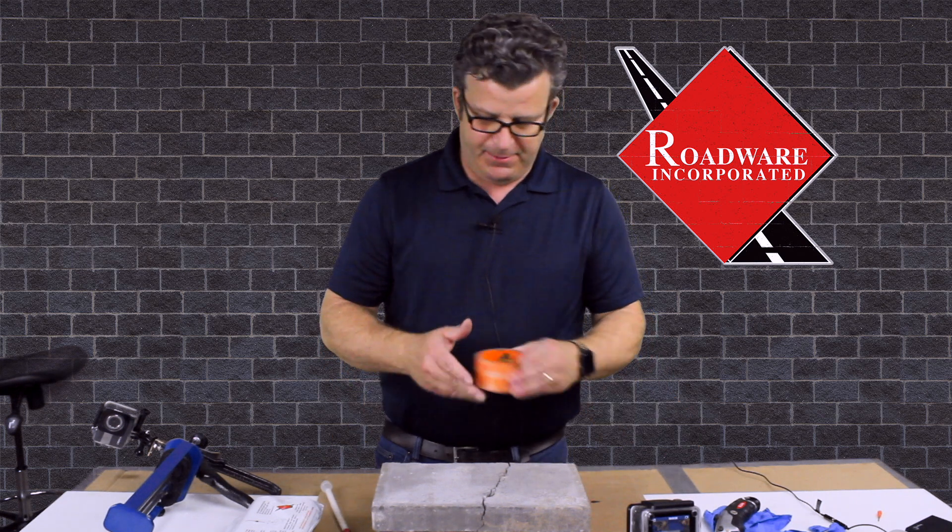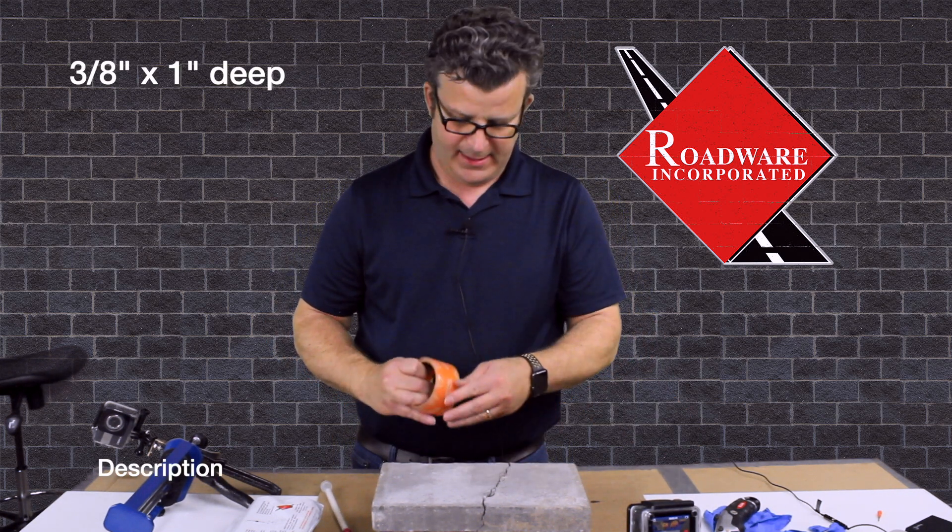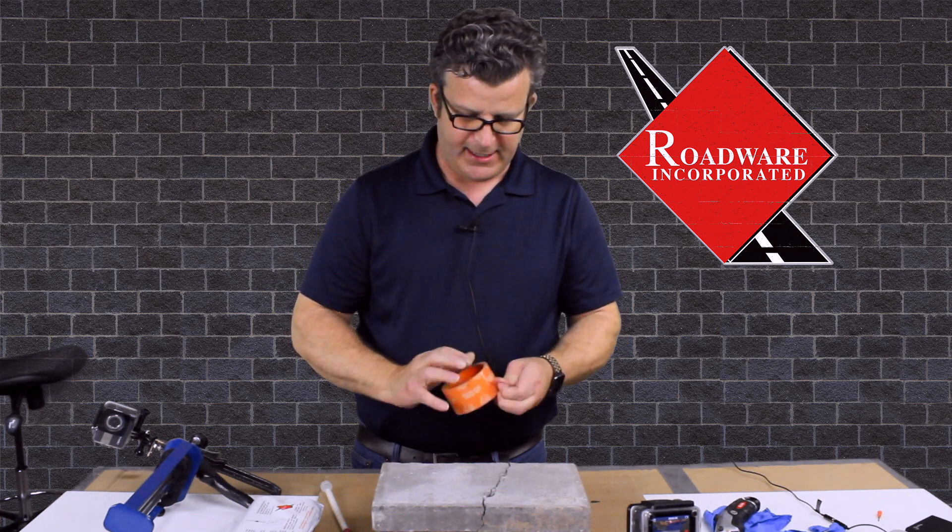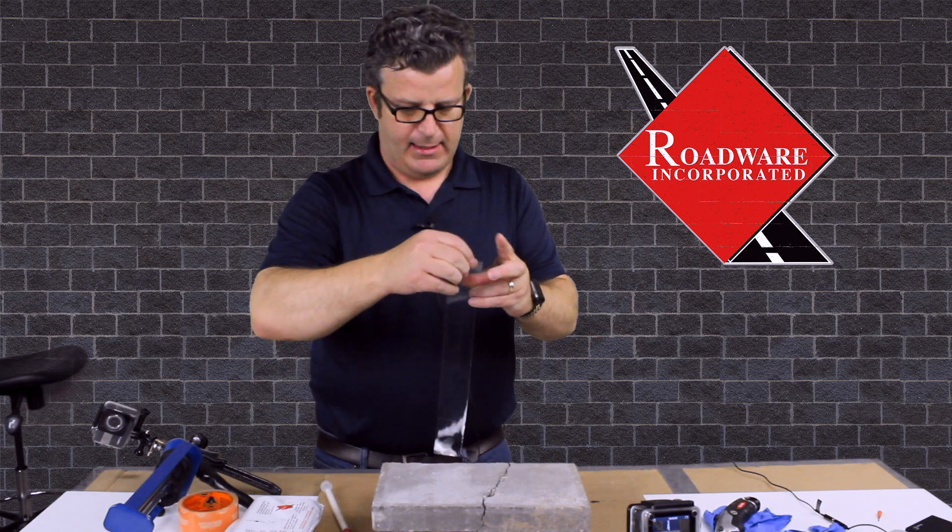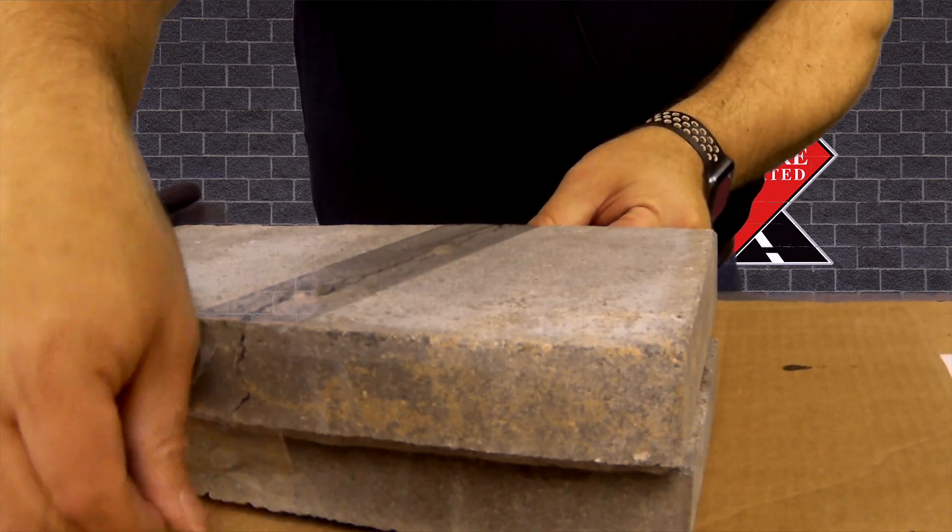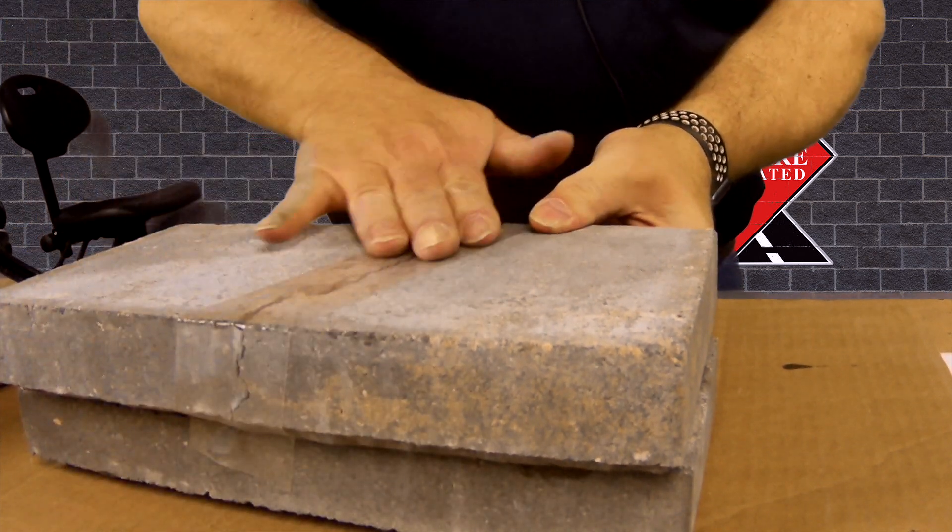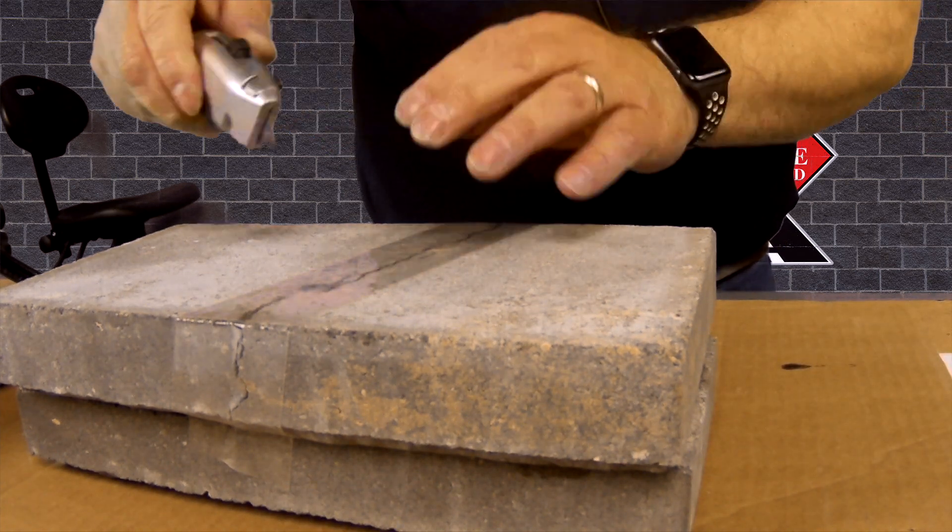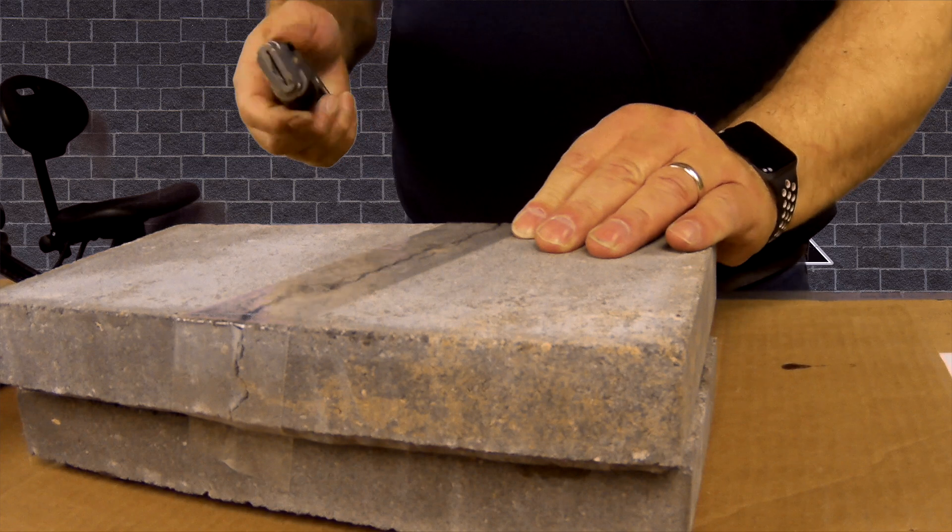Our first step is we have our holes drilled here in our concrete sample, and we're going to take some of our special tape here. This is a very thick repair tape that holds on to the concrete a little bit better. We're just going to tape it right on over top of our holes like this, and then we're going to take our razor blade and cut a little slit right in every hole just like so.